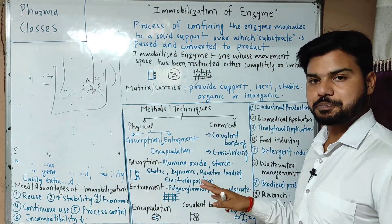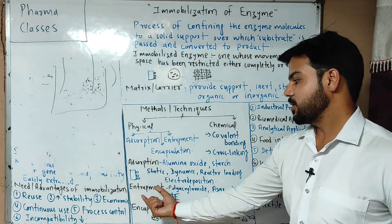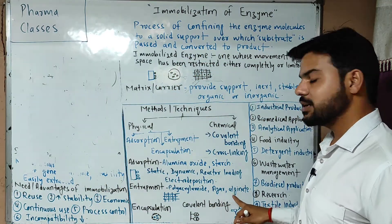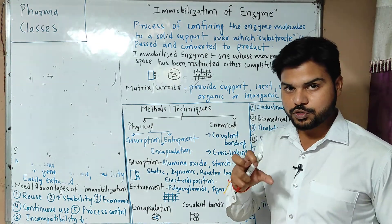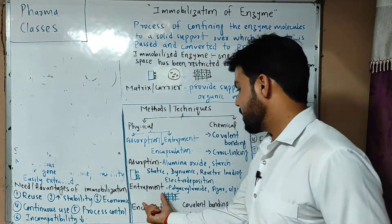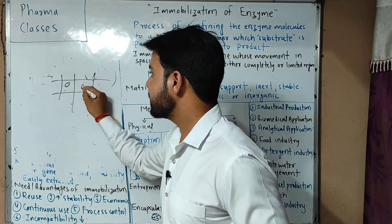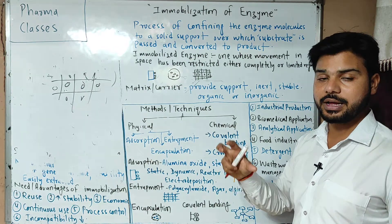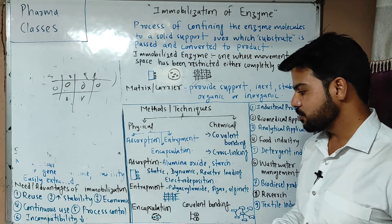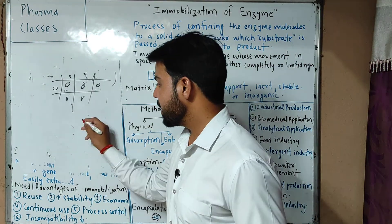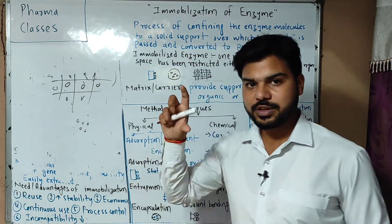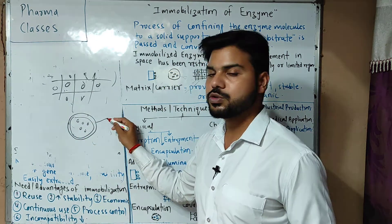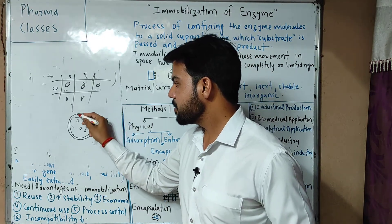Entrapment involves polymers like gels — polyacrylamide, agar, alginate — which have a pore structure. The enzyme gets entrapped in these pores, so we can immobilize through entrapment. Encapsulation involves encapsulating the enzyme within a semi-permeable membrane, created with the help of cellulose nitrate and nylon, which controls permeability.